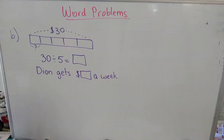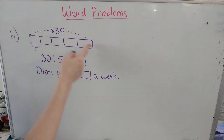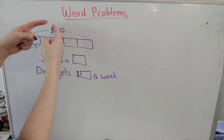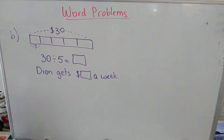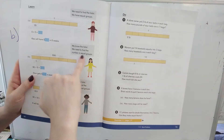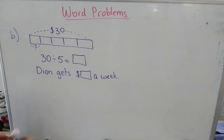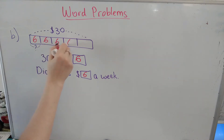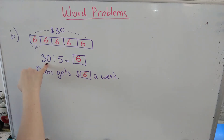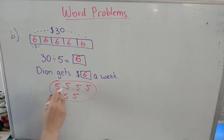Now let's look at letter B. The problem said after 5 weeks Dion has $30 from his allowance — here are 1, 2, 3, 4, 5 weeks, and he has $30. We know the total and we're trying to find how much he gets each week, so we divide because we need to find the number in equal groups. 30 divided by 5 was 6. 5 times 6 is 30, so Dion gets $6 a week. If you're unsure, count by groups of 5 until you reach 30: 5, 10, 15, 20, 25, 30 — you did that 6 times.